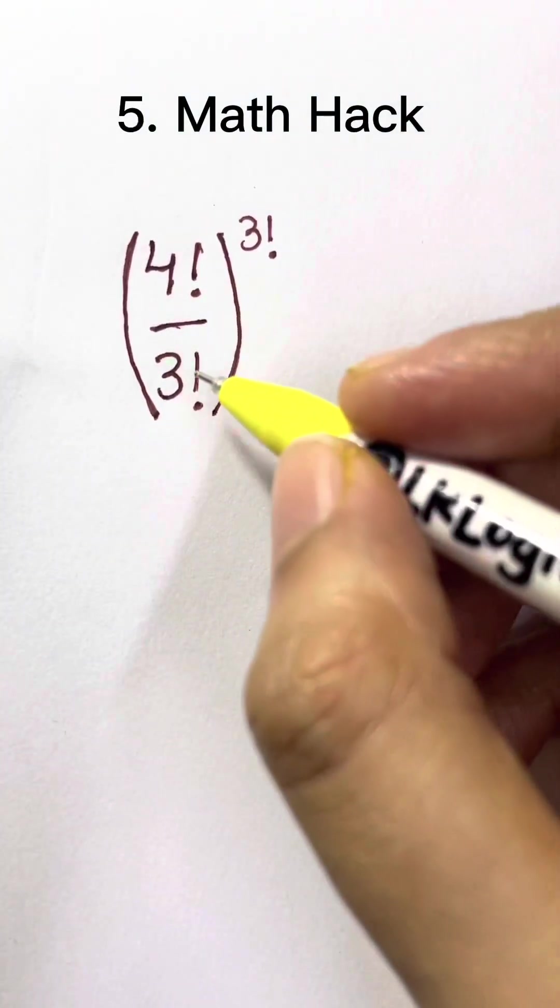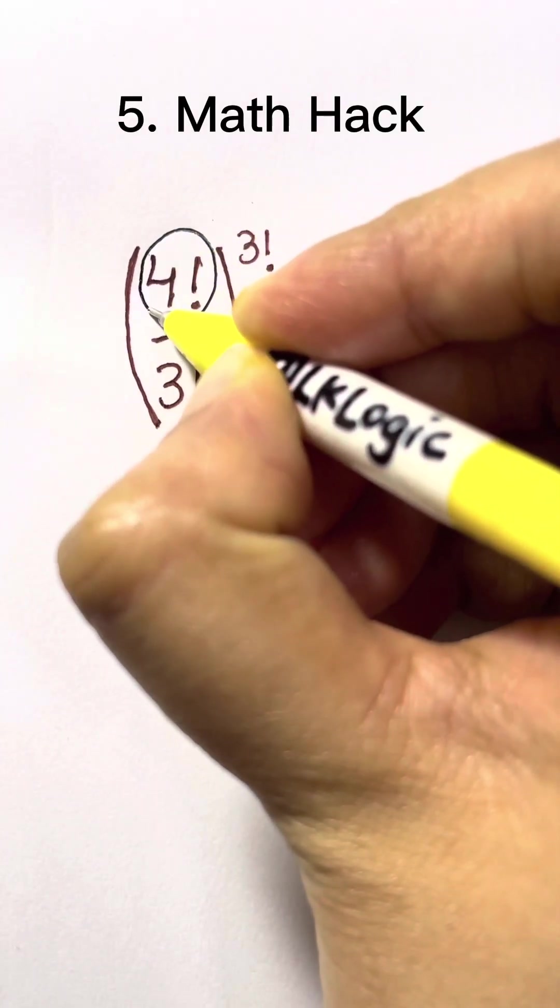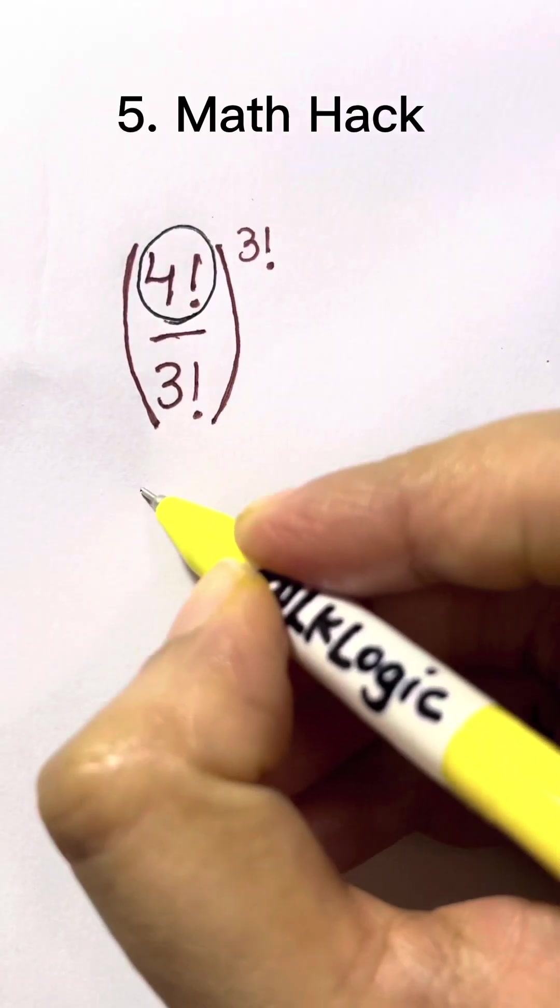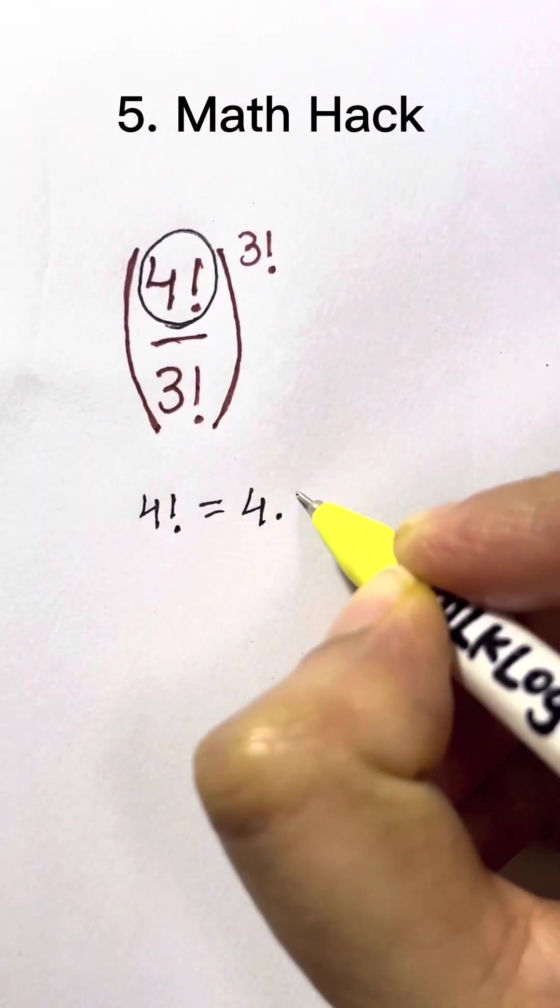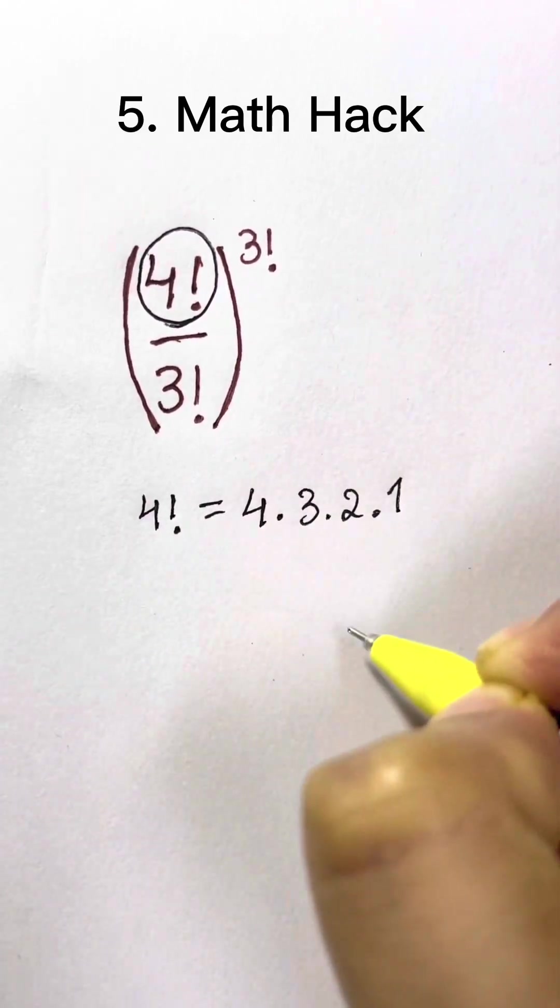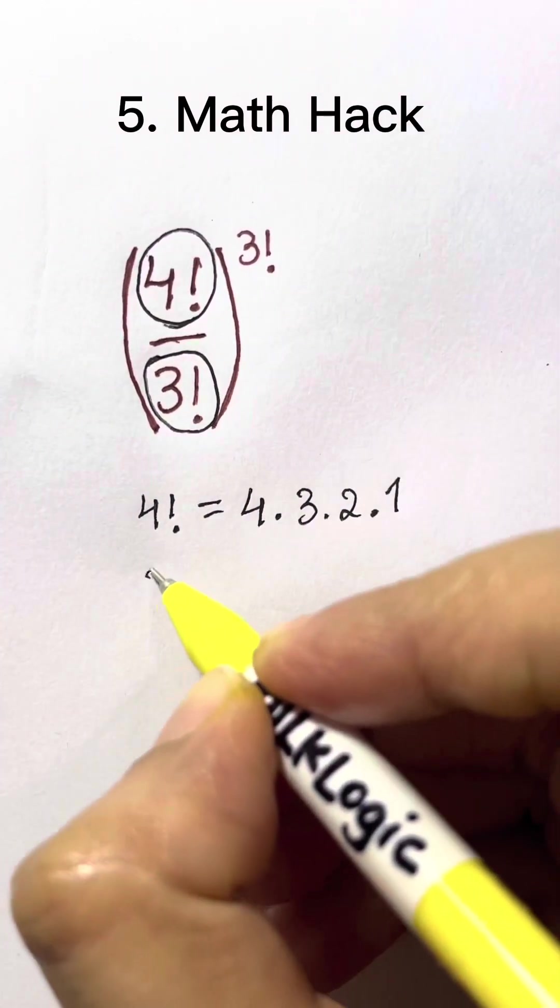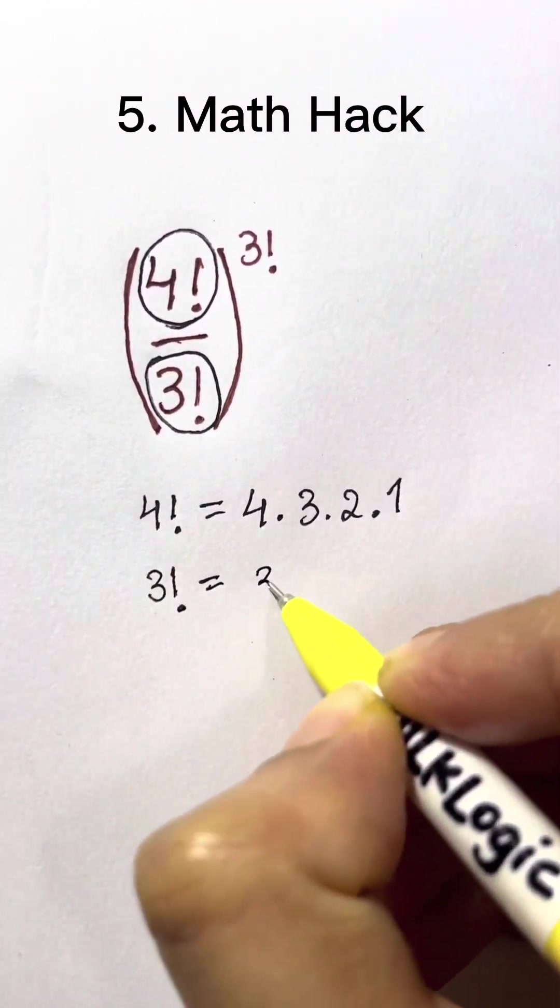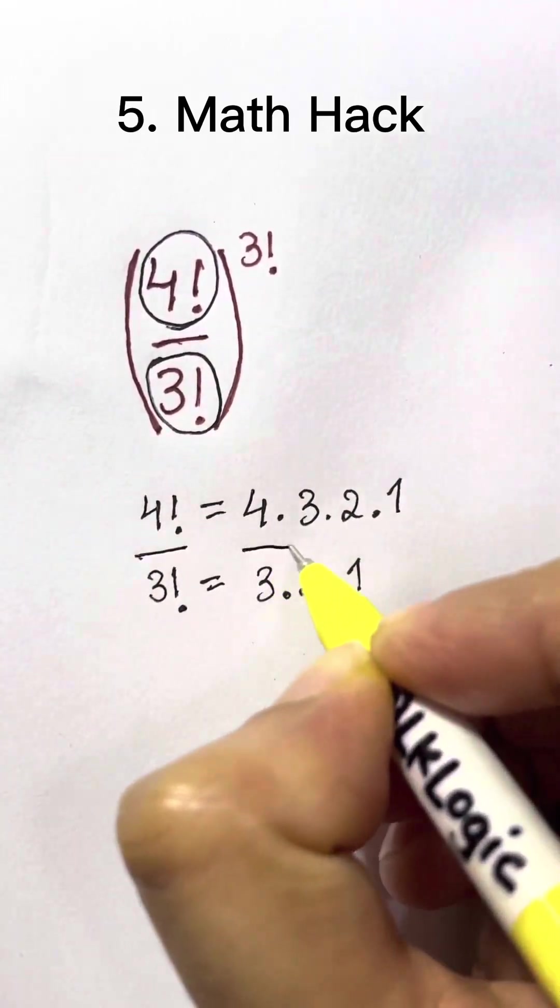4 factorial over 3 factorial to the 3 factorial. Let's write down what 4 factorial is. 4 factorial is basically 4 times 3 times 2 times 1. It goes on till 1. 3 factorial starts from 3 and goes on till 1: 3 times 2 times 1.